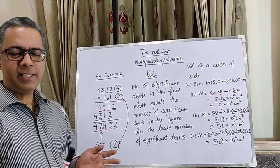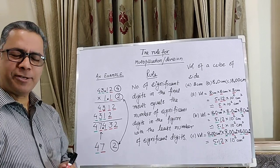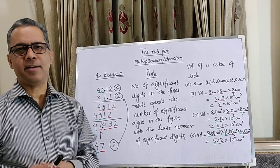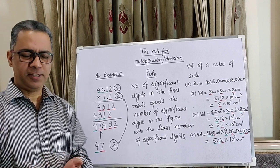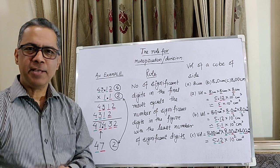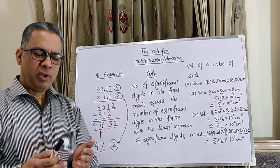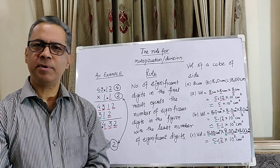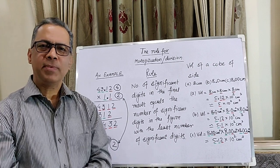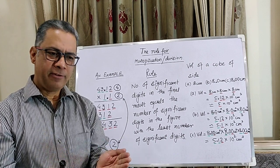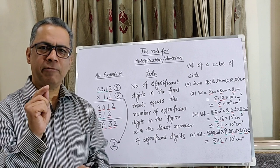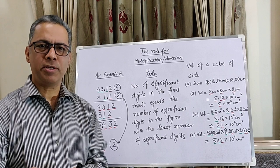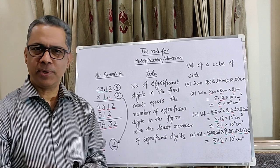Hello everyone. In this video we will be discussing how to apply the idea of significant digits in making calculations in physics. As we discussed in the previous video, we knew that we have to leave only one uncertain digit in our final reported answers to any calculations.